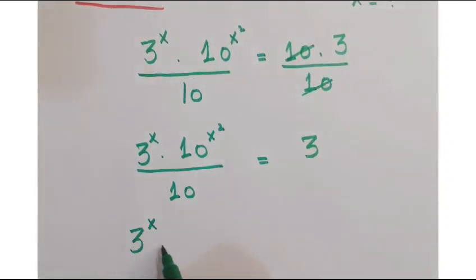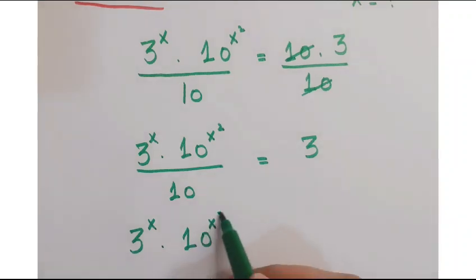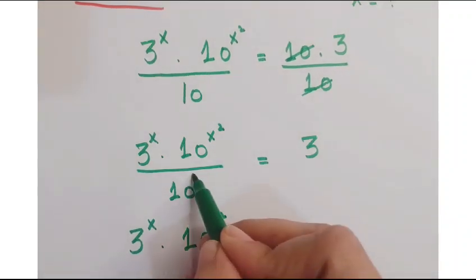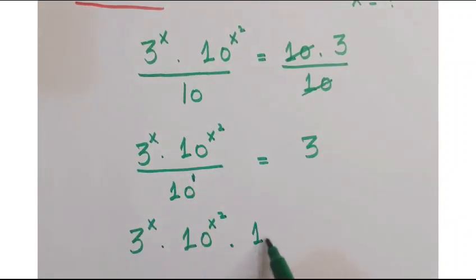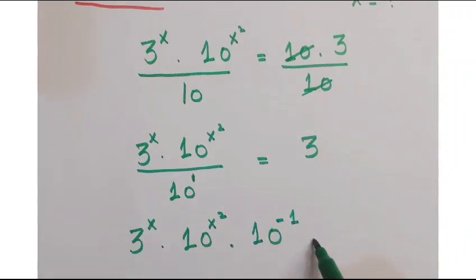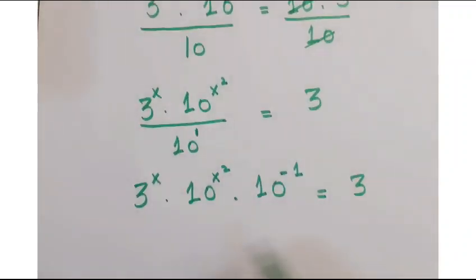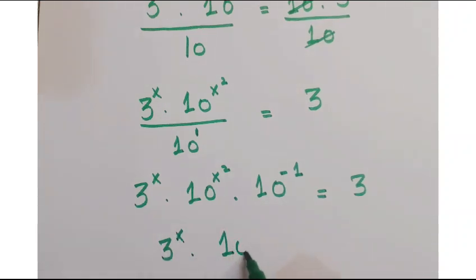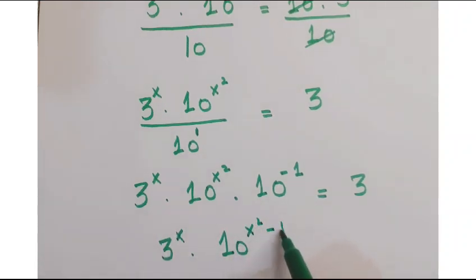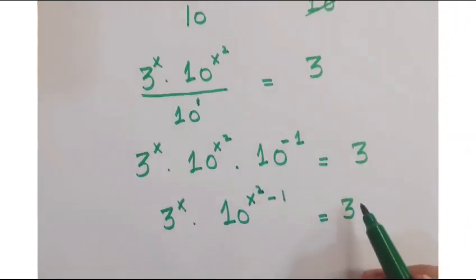Further, you can write it as 3 to the power x, 10 to the power x squared. Here, 10 has a power 1, so just reciprocate it. You will get the power minus 1, so you can simplify it as 3 to the power x into 10 to the power x squared minus 1 is equals to 3.